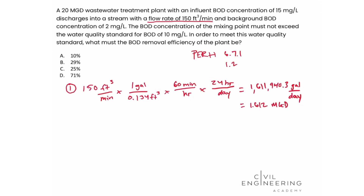So that's step one. Step two, we turn to PE Reference Handbook section 6.7.1 and specifically the equation listed there: Q1C1 plus Q2C2 equals Q3C3.